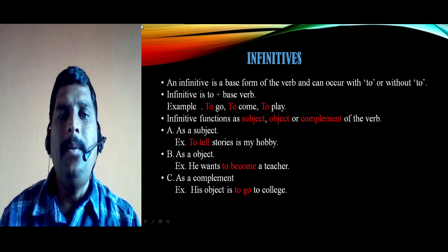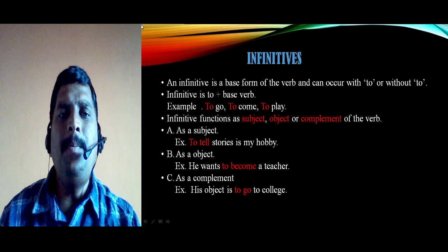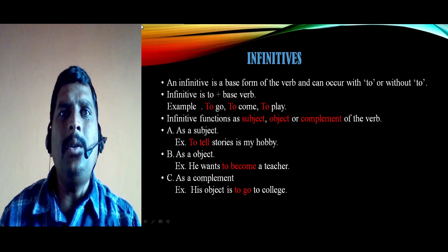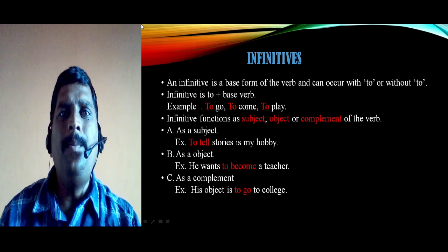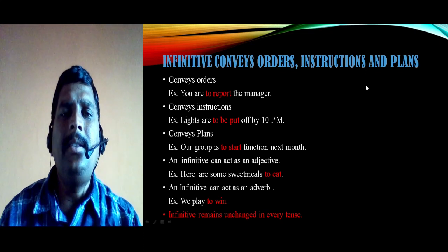First, as a subject — example: 'To tell stories is my hobby.' Here 'to tell' is the infinitive functioning as the subject. Second, as an object — example: 'He wants to become a teacher.' Here 'to become' is the infinitive functioning as an object. Third, as a complement — example: 'His object is to go to college.' Here 'to go' acts as a complement. So an infinitive can act as subject, object, and complement.